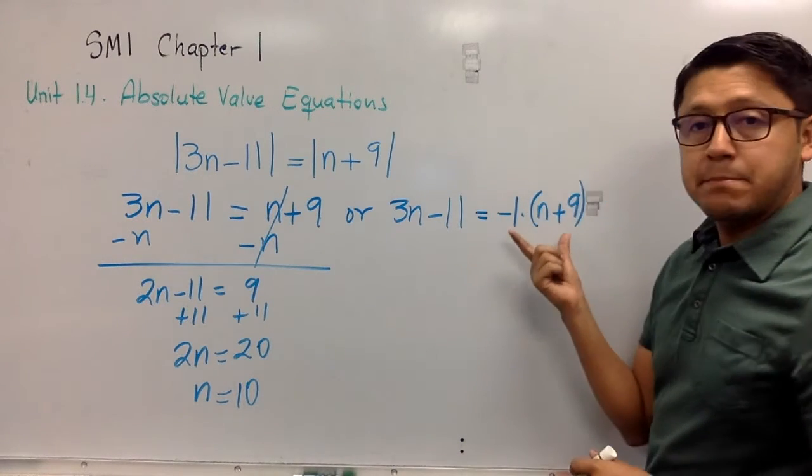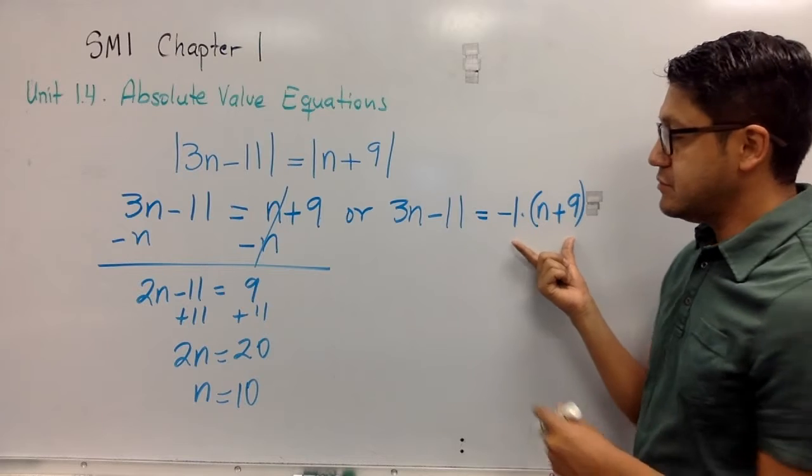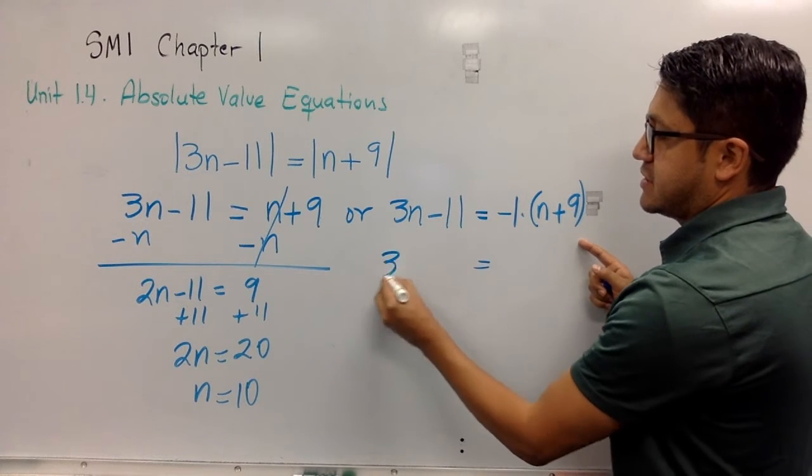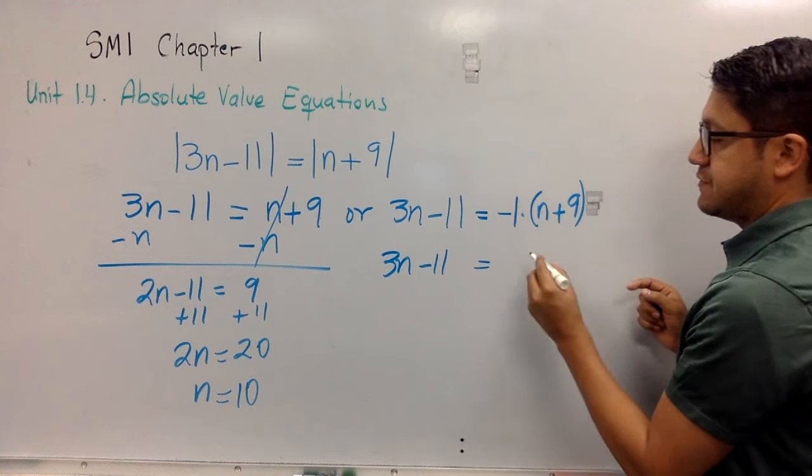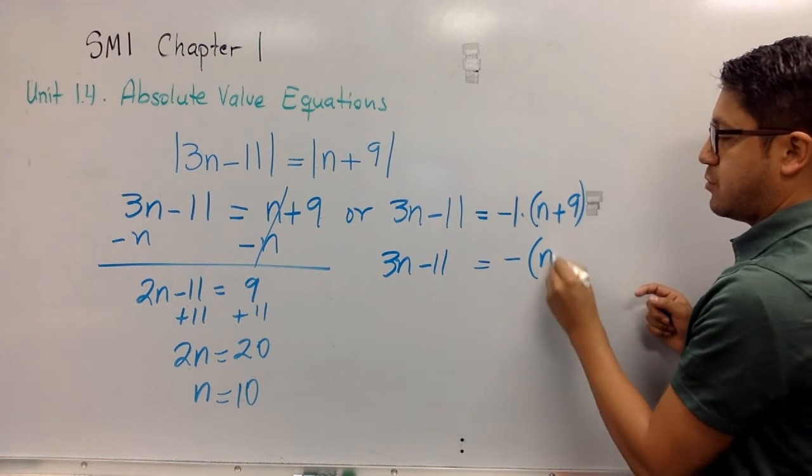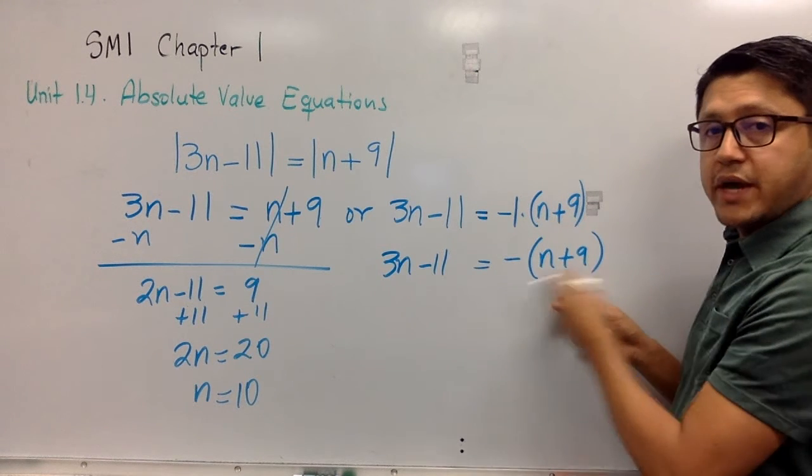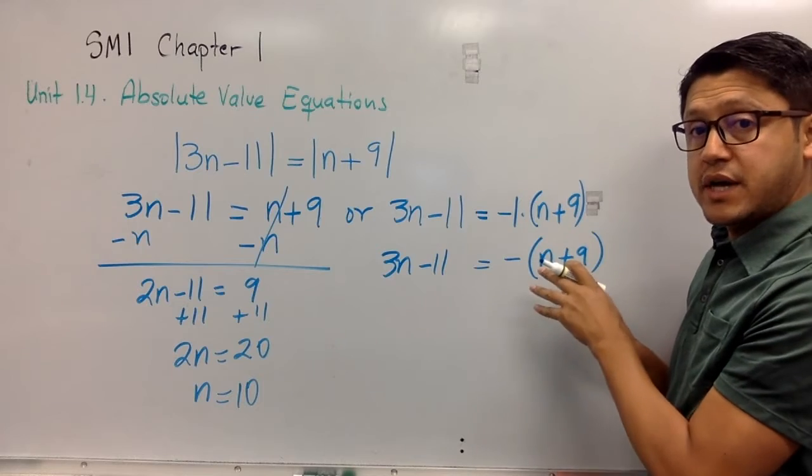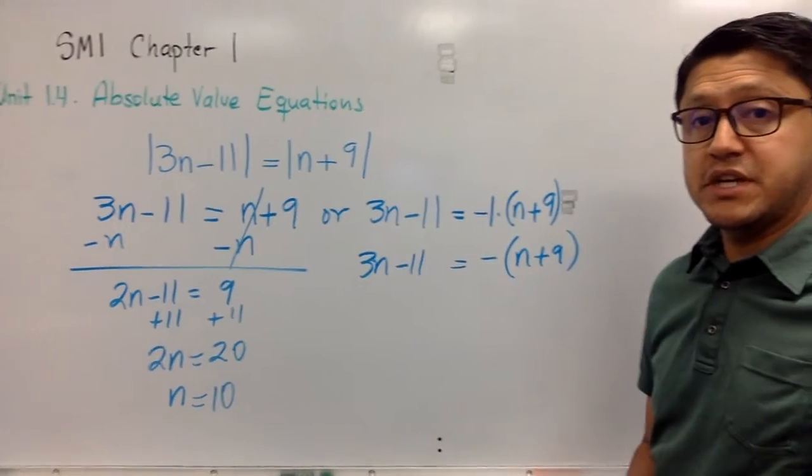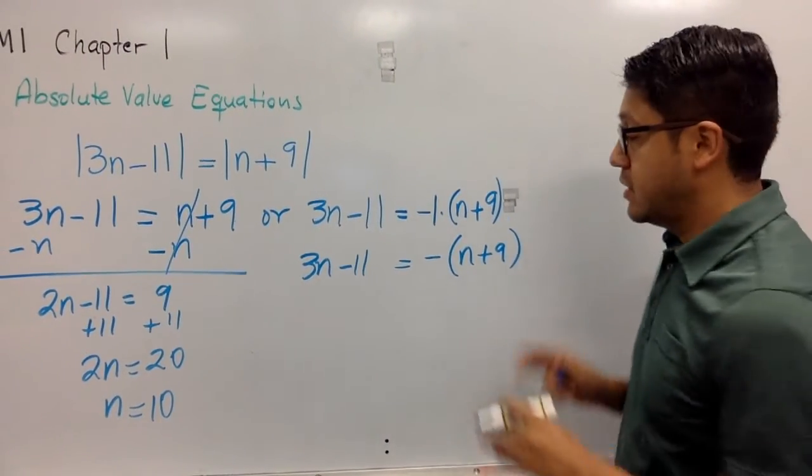Now, be careful over here. When I wrote this, it's the same thing as the negative form of n plus 9, okay? Now we're going to deal with that. It's pretty simple, but just be careful. So look,